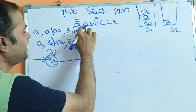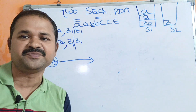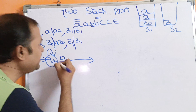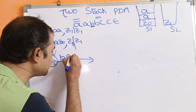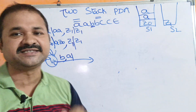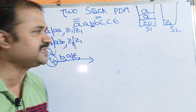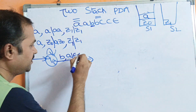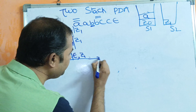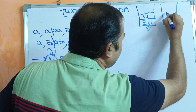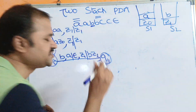Now let us focus on B. When B is read on Q0, we change state from Q0 to Q1. If the input symbol is B and stack 1 topmost symbol is A, pop A from stack 1 (pop is denoted by epsilon). If stack 2 topmost symbol is Z1, push B onto stack 2, making stack 2 content BZ1. We move from Q0 to Q1 once the first B is read.